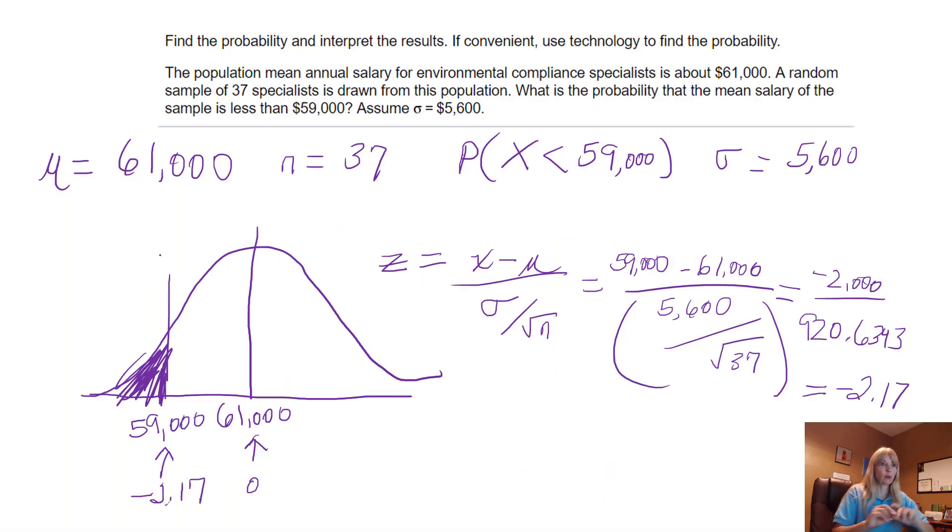So that's what this area is. Let me get a different color going on right here. So that is saying this area, this probability is 0.0150. And it also asks if this is unusual. And typically, we say if anything is below or above two standard deviations is unusual.